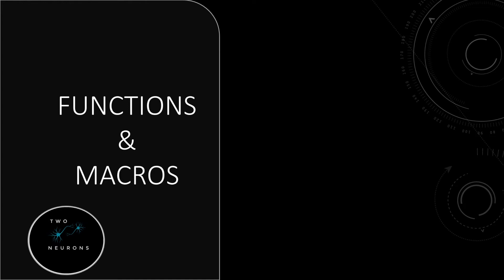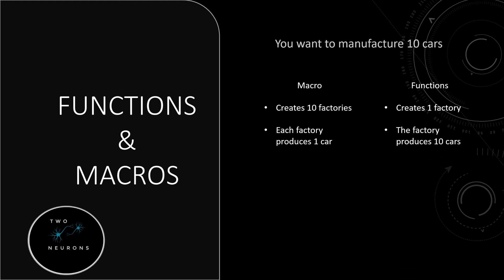Let's talk about functions versus macros. We've used functions already — we've made a whole bunch of them. We haven't really used macros yet. Let's start with a practical example: let's say we want to manufacture 10 cars. Both a function and a macro can do this, but they'll do it differently. A macro will create 10 factories, each producing one car, so you get your 10 cars. A function will create one factory that produces all 10 cars.